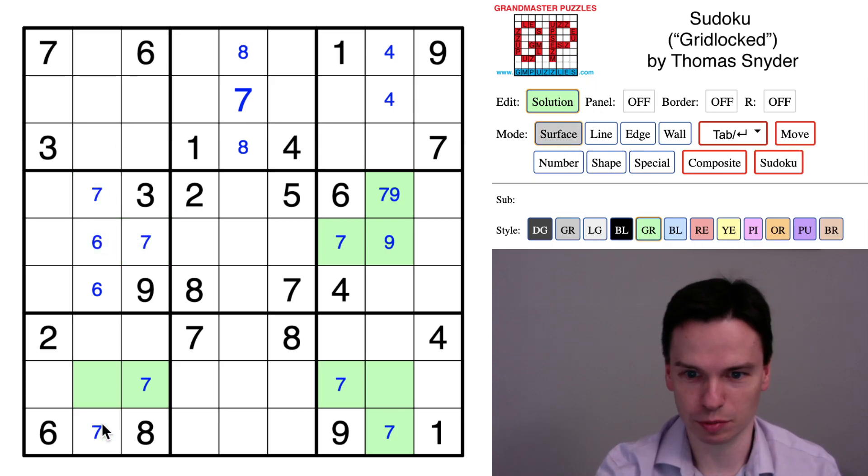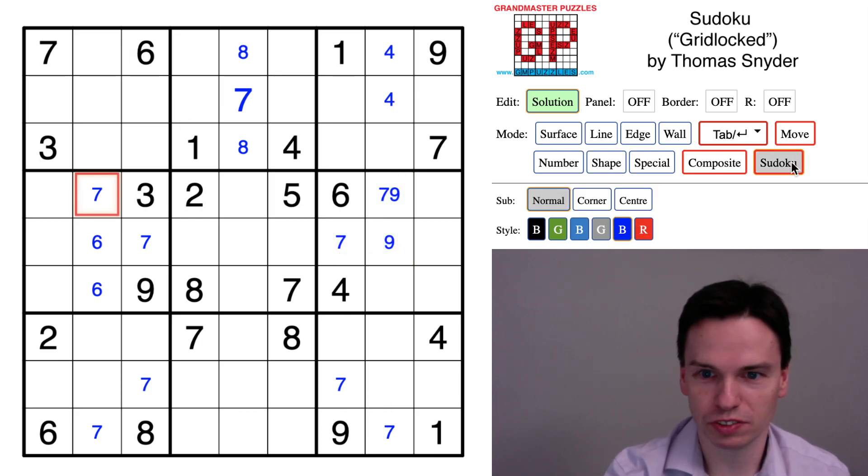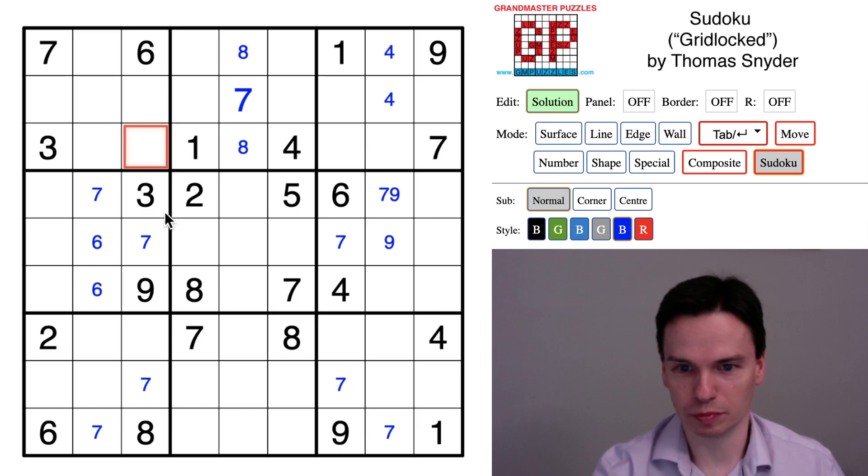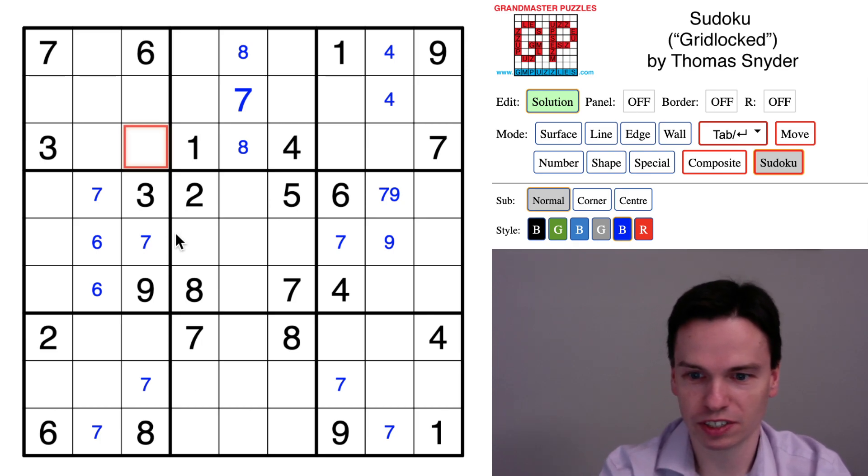It's useful later on actually, but it's useless at this moment. I normally track positive information, so other solvers may have tracked negative information as digits that can be remaining in cells.